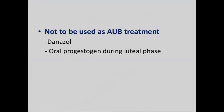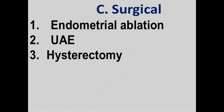Drugs not to be used in AUB: danazol. Progestogens should not be used only during the luteal phase — progestogens have to be started from day 5 to day 26, not from day 16 to day 25.